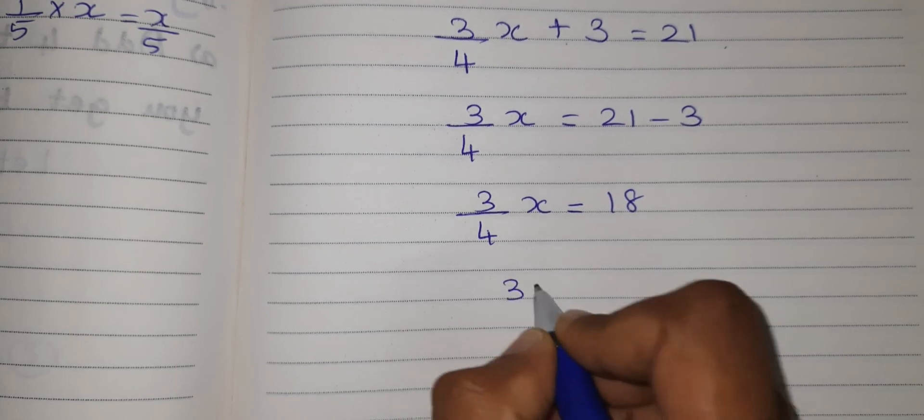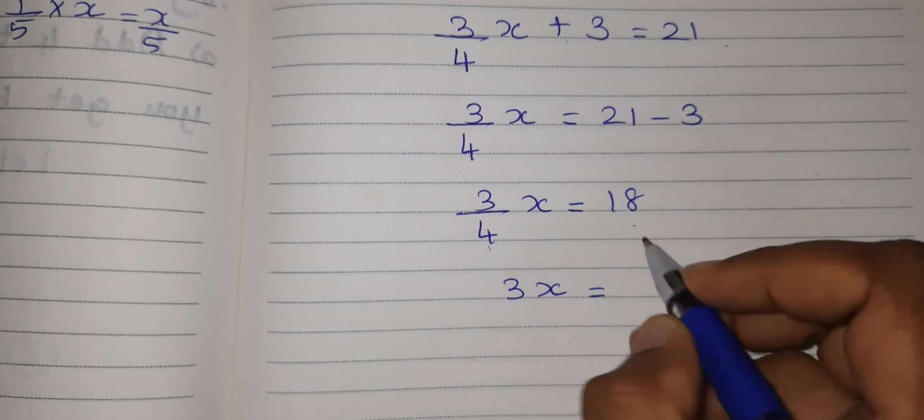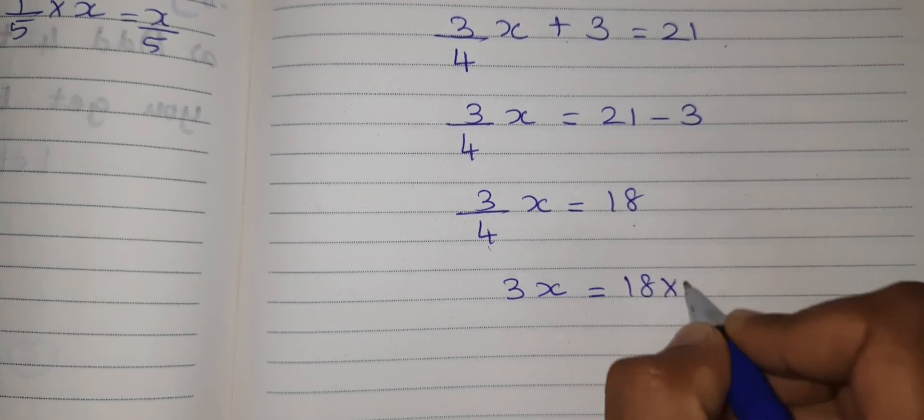Next keep 3X as it is. Then 4 is in division. When it goes to this side it will become multiplication. So 18 into 4.